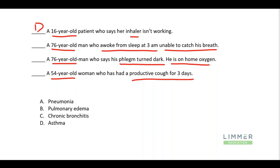Picture the chronic bronchitis patient — this goes on for a long time. What would make me think something is a chronic condition? The fact that he's on home oxygen. What makes COPD worse? Usually a respiratory infection — infections anywhere can make it worse. His phlegm turned dark. So this is my chronic bronchitis patient.